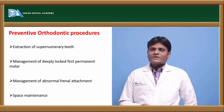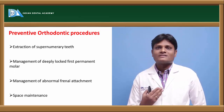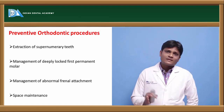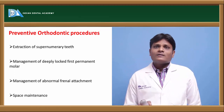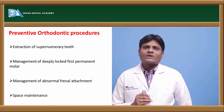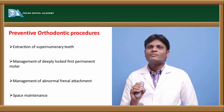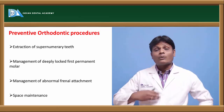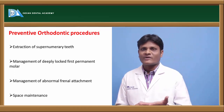The mesiodens is the most common supernumerary tooth seen in the oral cavity. Supernumerary teeth may also be seen in the mandibular premolar area, maxillary lateral incisor area, or paramolar region. Wherever the supernumerary teeth are located, they should be removed to allow sufficient alignment of the adjacent normal teeth and to avoid occurrence of crowding or any kind of malocclusion like spacing.